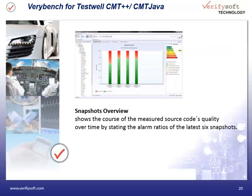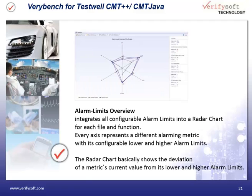The snapshot overview shows measured source code over time by presenting the latest six snapshots of your project. Testbed CMT++ defines alarm limits for most of its metrics. The alarm limit overview shows the metrics of your code as well as the lower and upper alarm limits. This way you can see with a single view whether your project metrics are good or whether they are out of recommended limits.